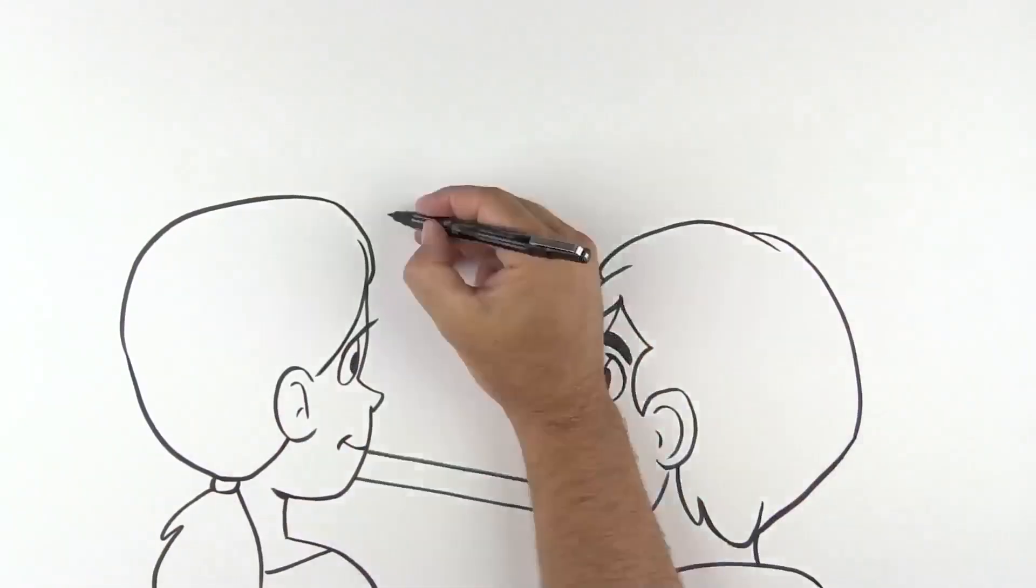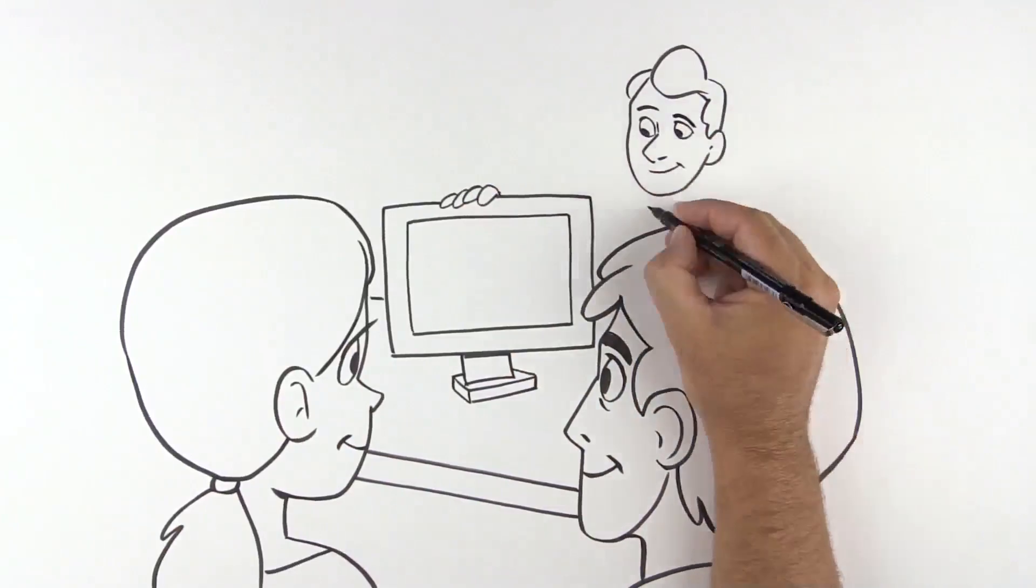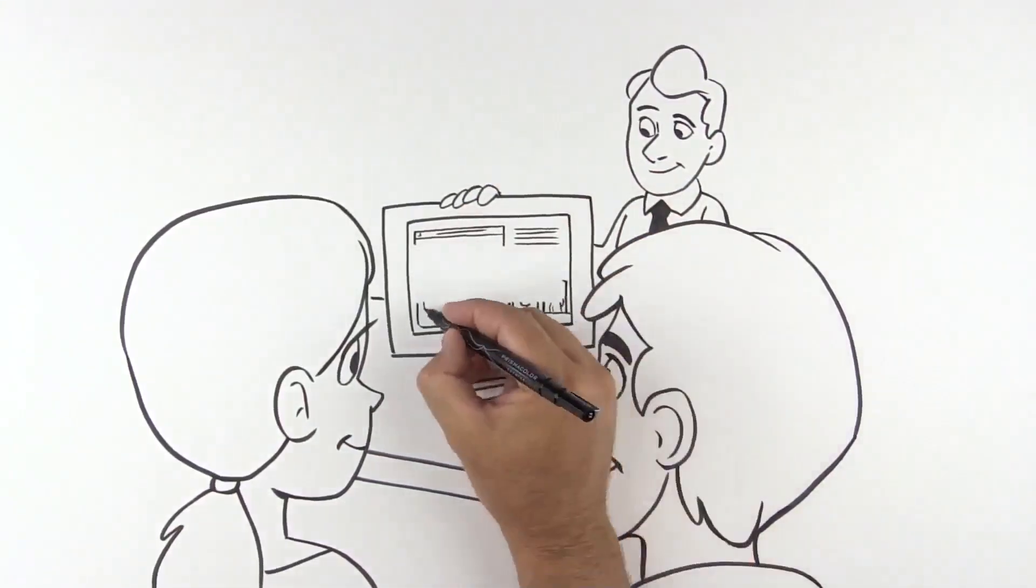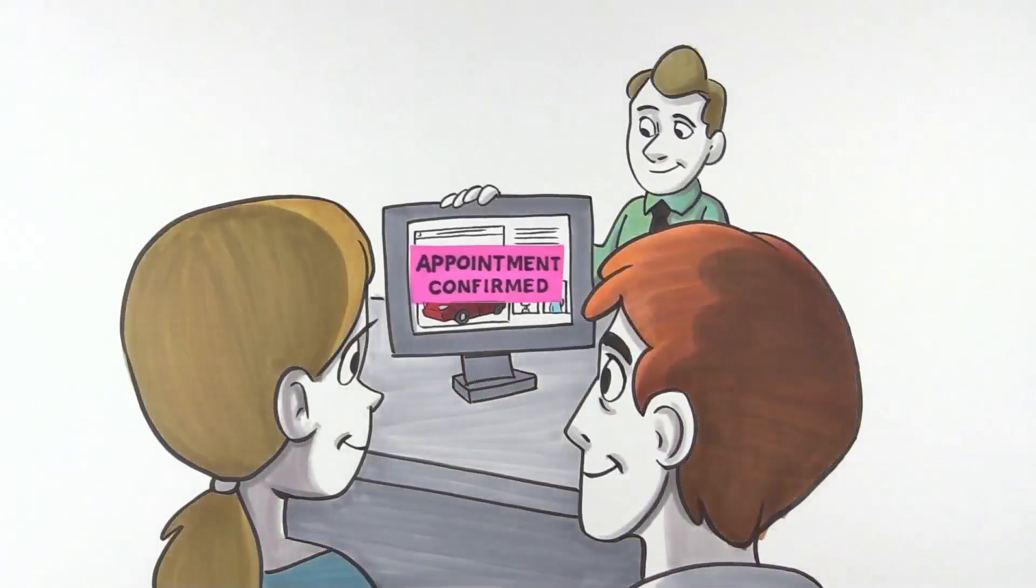After the deal is complete, your salesperson shows your customer a personalized website with their new vehicle's information and features, social sharing tools, and service records. Your salesperson schedules the first service appointment on this website, which will even allow them to pay online for their service invoices.